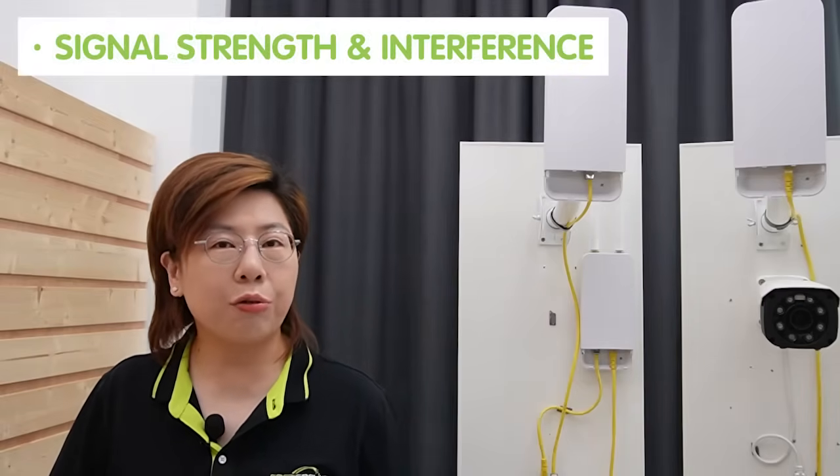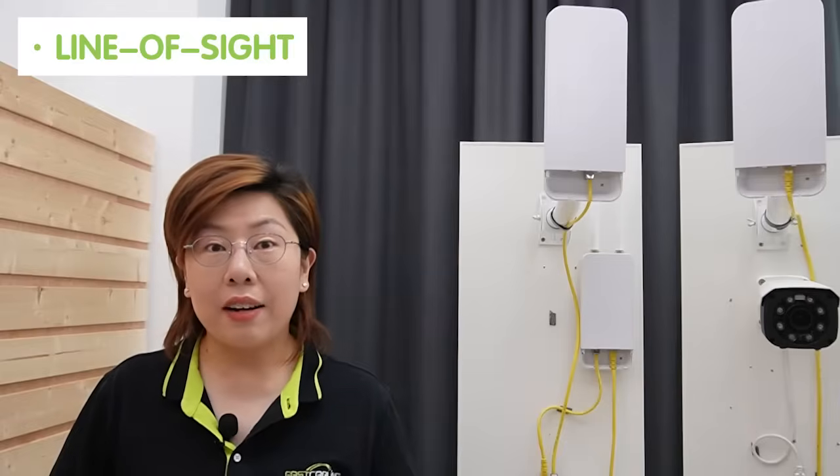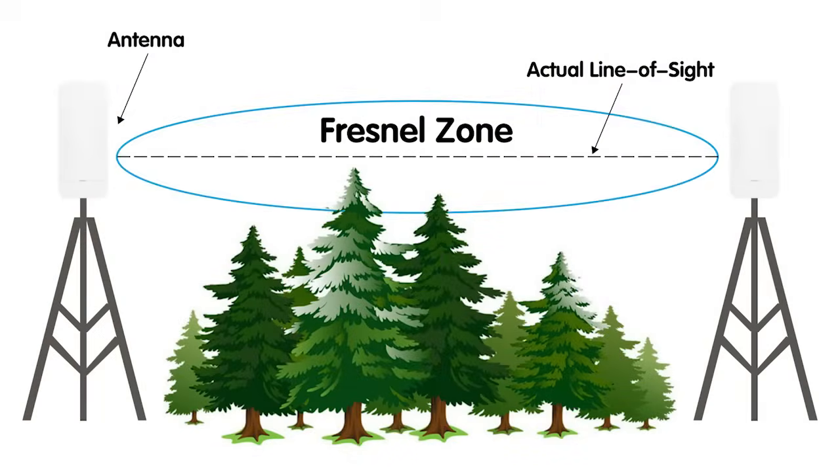Before installation, careful planning is crucial. Consider the layout and distance — assess the physical layout and distances between buildings. Check for signal strength and interference, including other wireless signals and physical obstructions. And ensure there is a clear line of sight between the main bridge and all the secondary bridges.